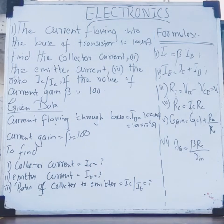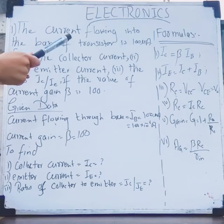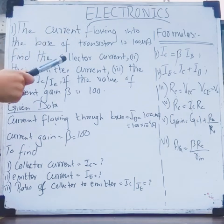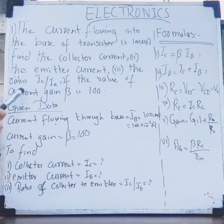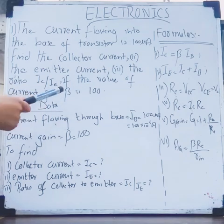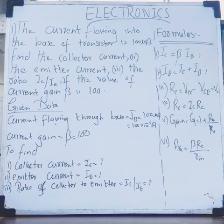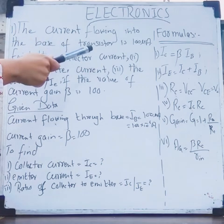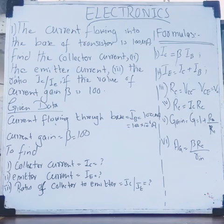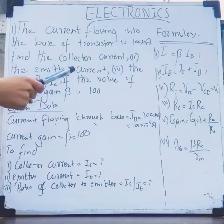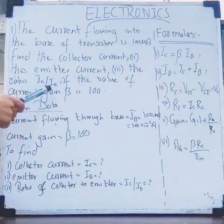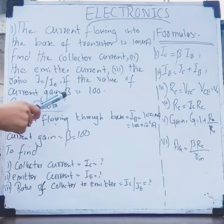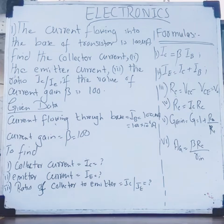The current flowing into the base of the transistor is 100 microamperes. Find the collector current, the emitter current, and the ratio Ic/Ie if the value of current gain beta is 100. Let's read this statement again. The current flowing into the base of transistor is 100 microamperes. Find the collector current, the emitter current, and the ratio of collector to emitter when the current gain beta is 100. Let's find out the data from this statement, which is my second step.